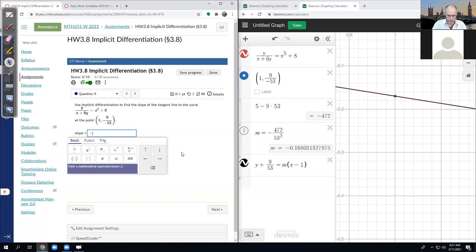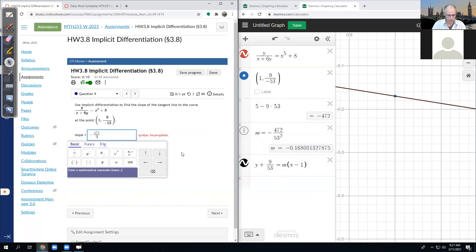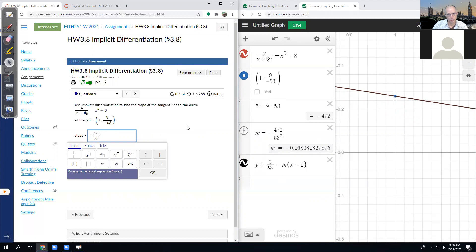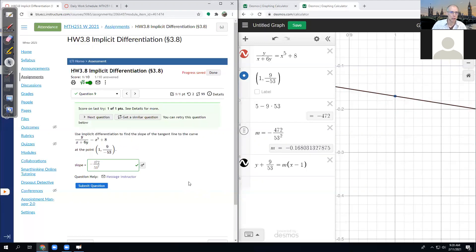The slope is for mine negative 472 divided by 53 squared. And it says I can enter a mathematical expression. So it should accept that. Let's submit one for once. Cool. We did it. And that was a workout.